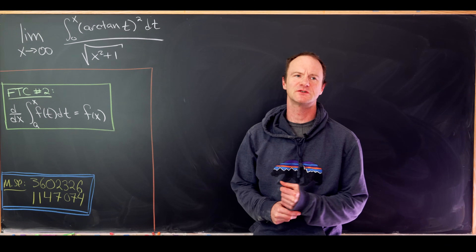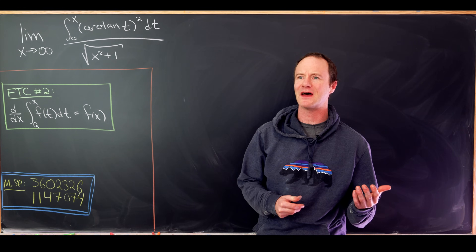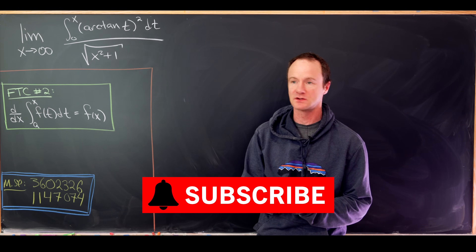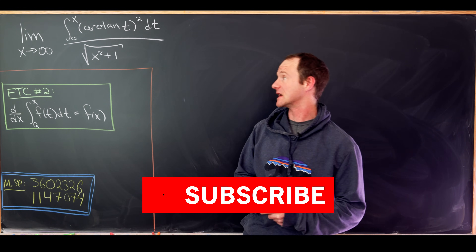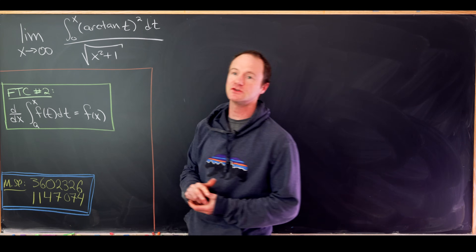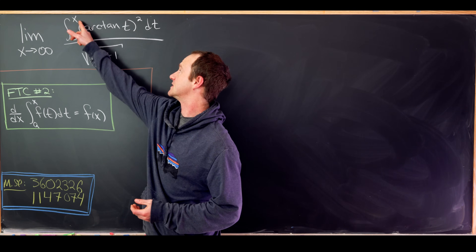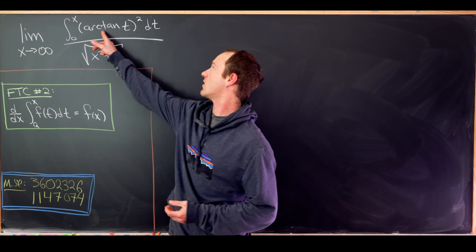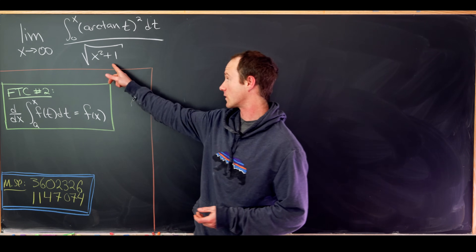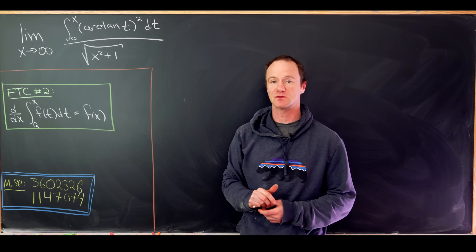Here I've got two nice limits which would arrive probably at the tail end of a calculus-type course. We'll do them one at a time. The first is the limit as x goes to infinity of the integral from zero to x of arctan of t squared dt, over the square root of x squared plus one.